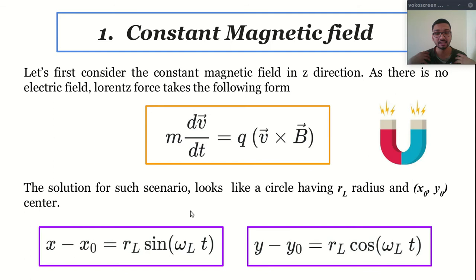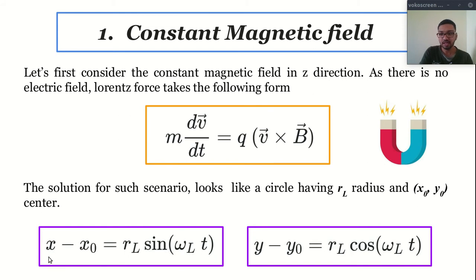How, you may ask? What you do is square this equation and add them. What will you get? X minus X₀ squared plus Y minus Y₀ squared is equal to R_L squared.